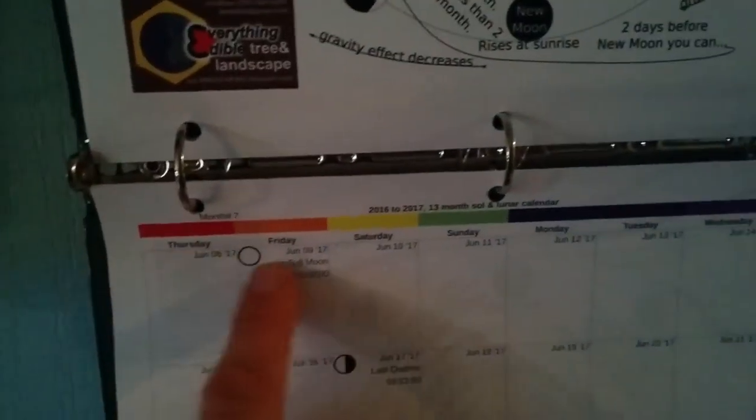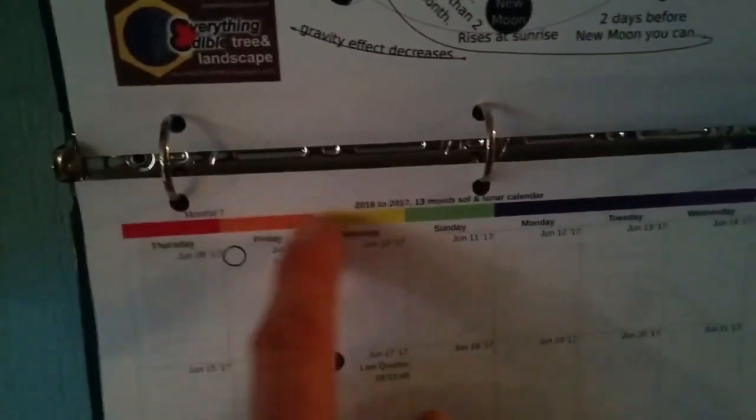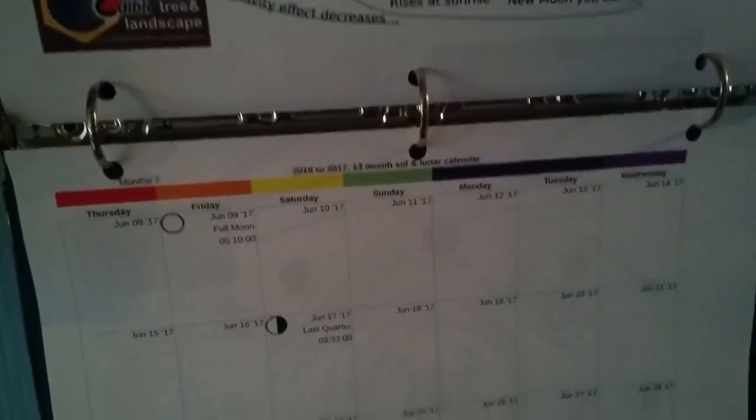I've got at the top of the calendar Thursday, Friday, Saturday, and so on. I've also used colors. Seven colors of the rainbow.